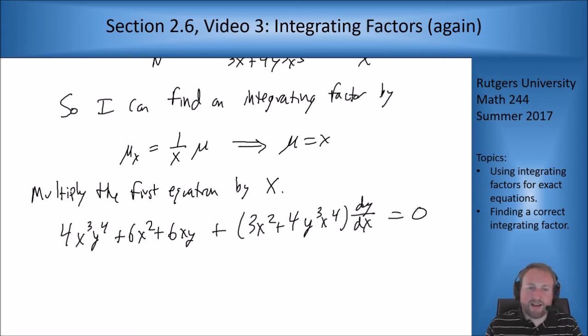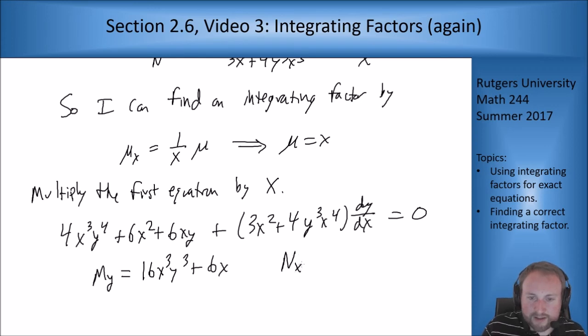And that is 4x³y⁴ + 6x² + 6xy + (3x² + 4y³x⁴) dy/dx = 0. So this is the equation we get. Let's check it's exact. I want m_y, which gives me 16x³y³ + 6x. And I want n_x, which gives me 6x plus 16y³x³. So it's exact. We're good. We have an exact equation. So we're going to try to solve it.